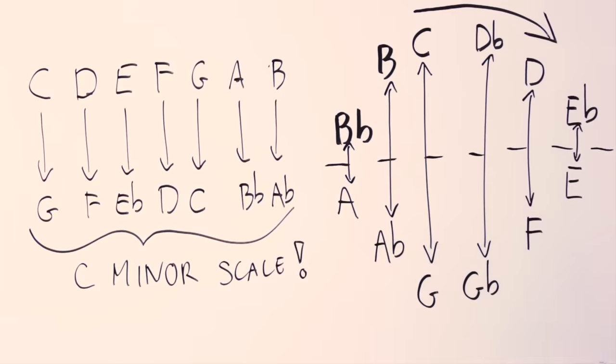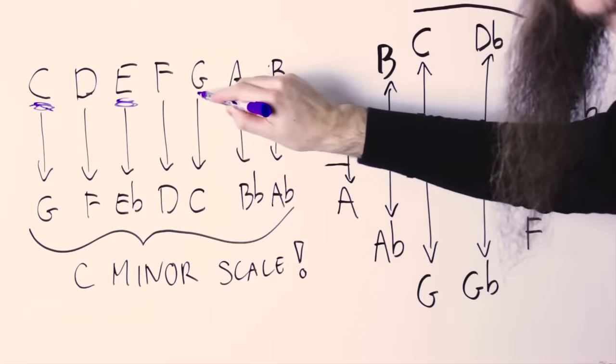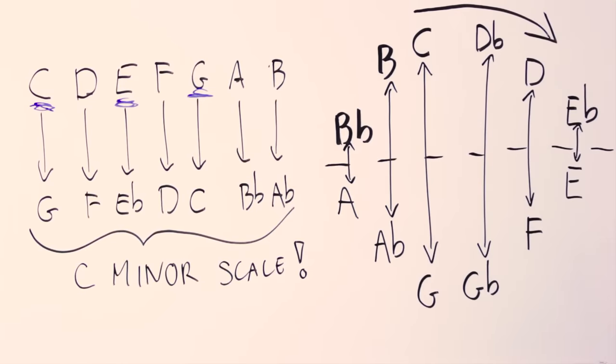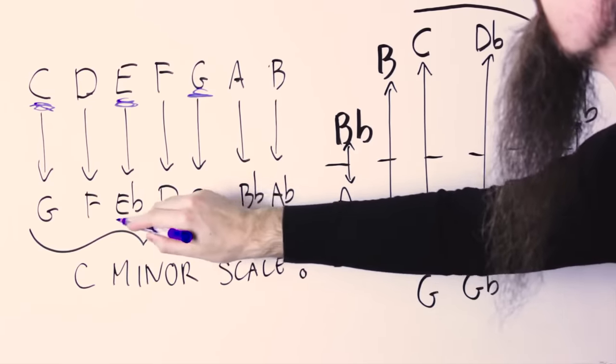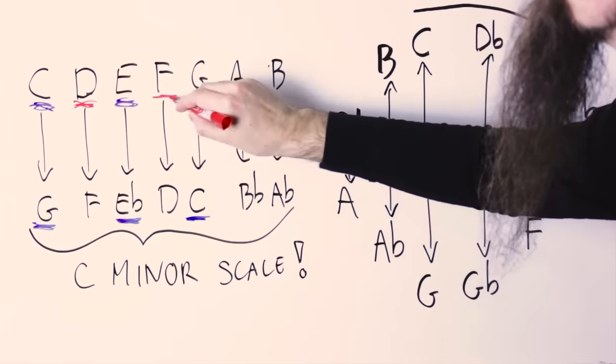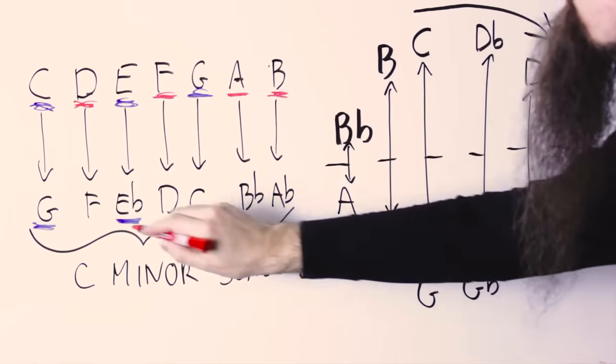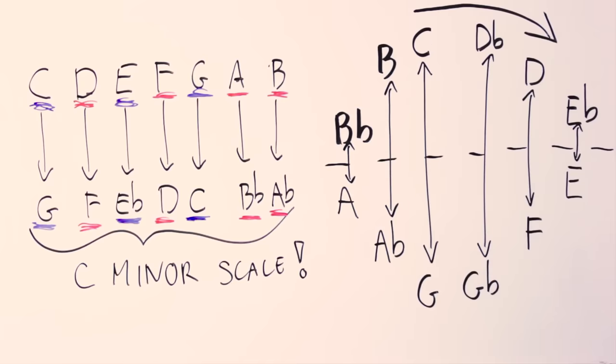But even more important, we notice that all the stable notes in the C major scale, C, E and G, get transformed into all the stable notes in the C minor scale, C, E flat and G. And all the active notes in the C major scale, D, F, A, B, get transformed into active notes in the C minor scale, D, F, A flat, B flat.